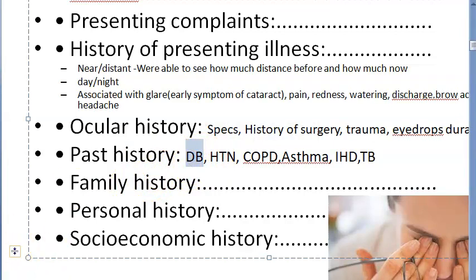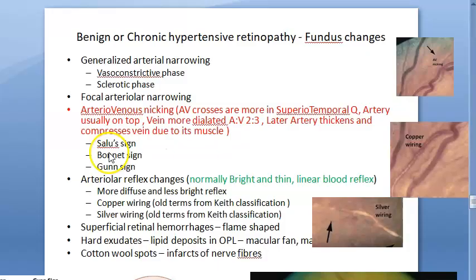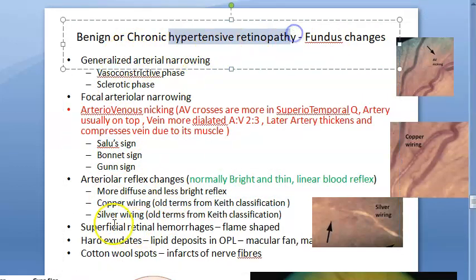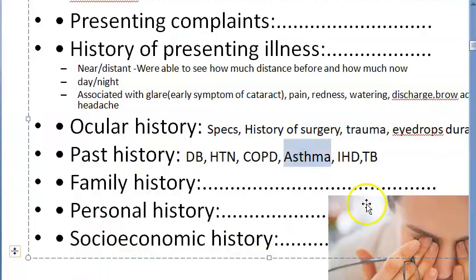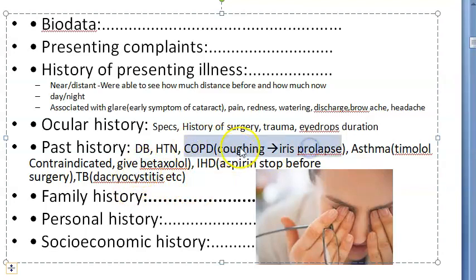In hypertensive retinopathy, look for Salus sign, Bonnet sign, Gunn sign, copper wiring, and silver wiring. In asthma, timolol is contraindicated; betaxolol, which selectively blocks beta-1 receptors, can be used safely in asthma and COPD. However, betaxolol has more cardiac side effects, so cardiac history is also important. In COPD, coughing can lead to iris prolapse.